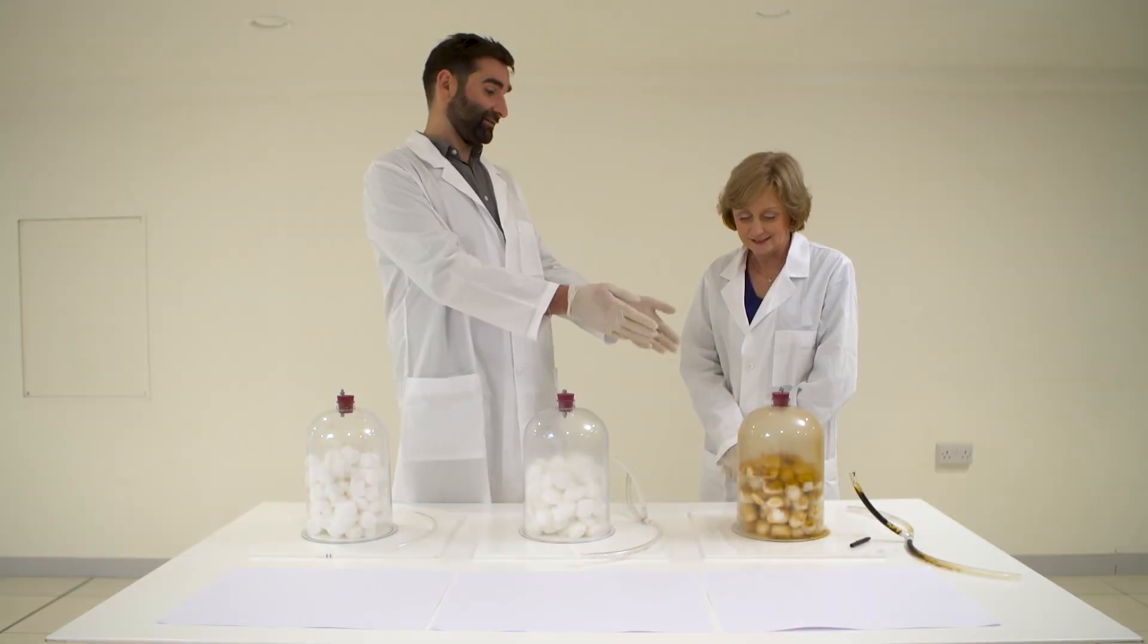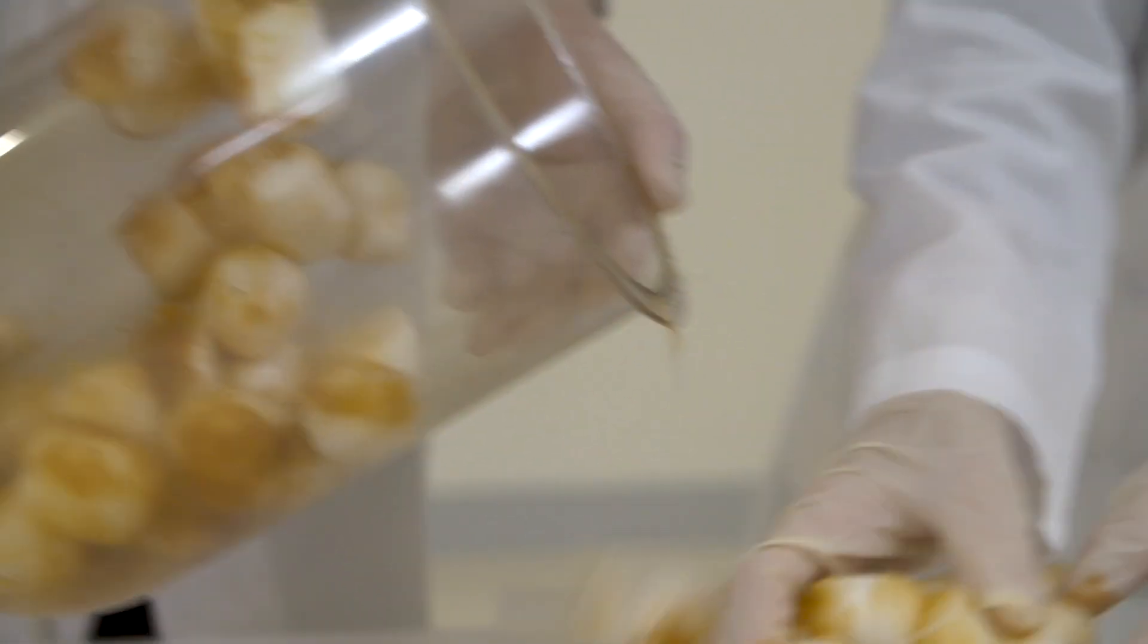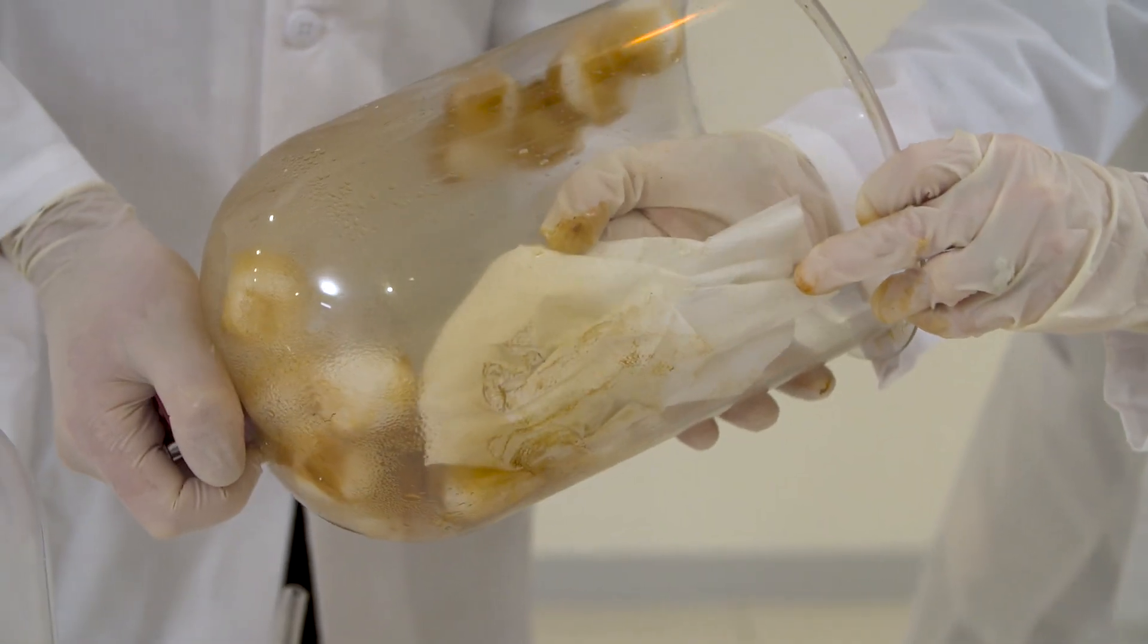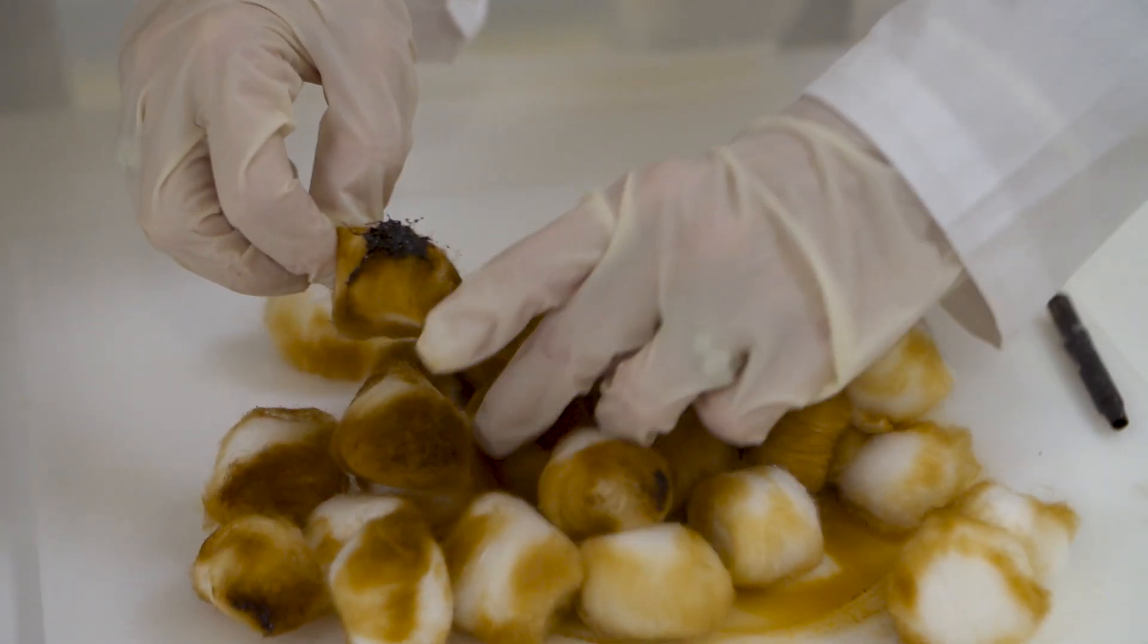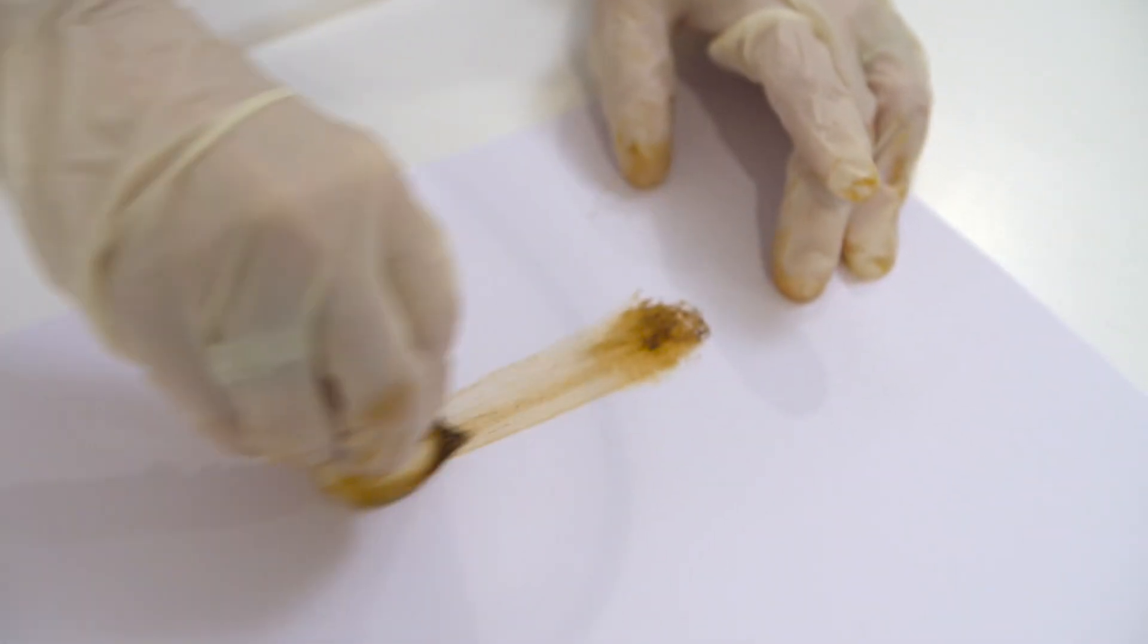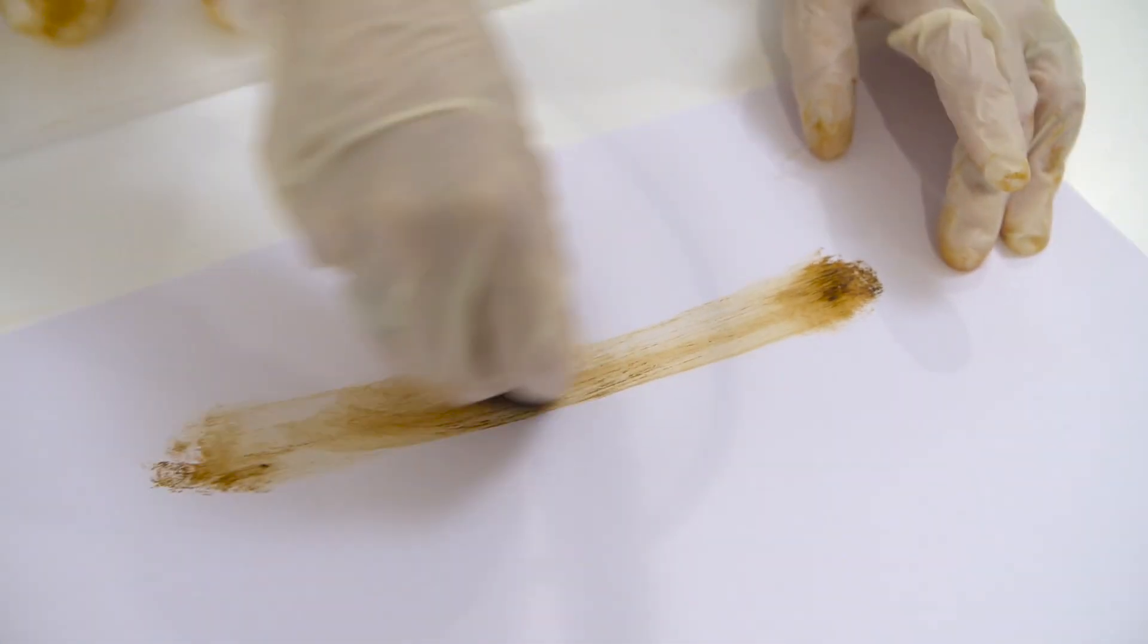And here is the bell jar with cigarette smoke. I mean it just is so revolting. Look at this, that's just the inside of the jar. Here, a lump of tar. So that's what's going on inside your lungs.